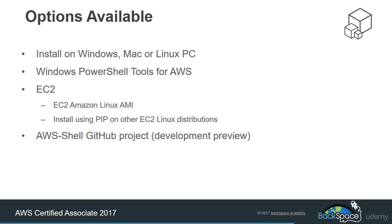Another option is a very new one — the AWS Shell, which is a GitHub project currently available in development preview. It's an integrated shell environment that gives us some efficiency tools: it'll have auto-complete, snippets, and that sort of thing available if we're doing a lot of scripting in the shell.